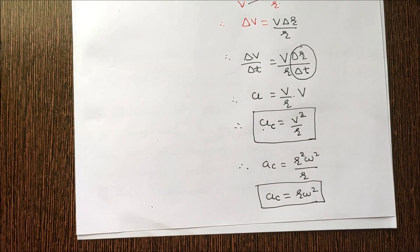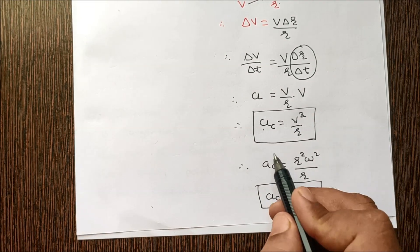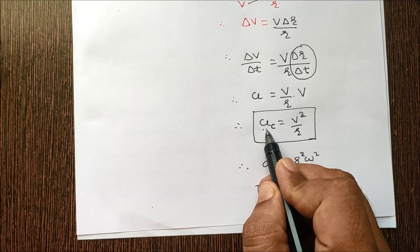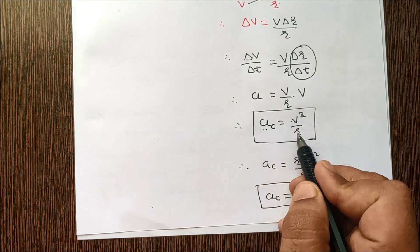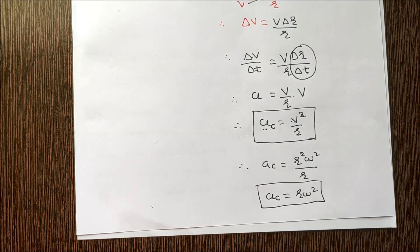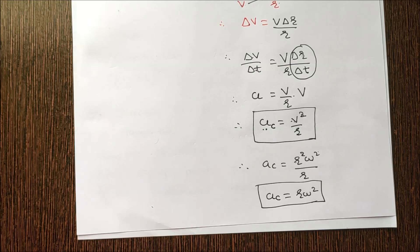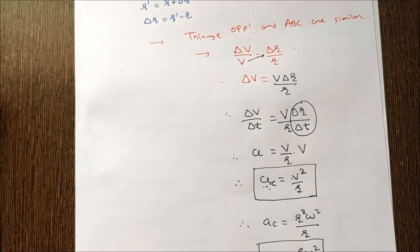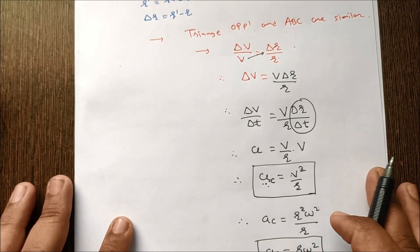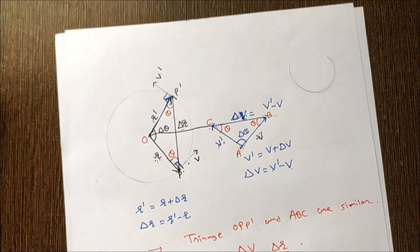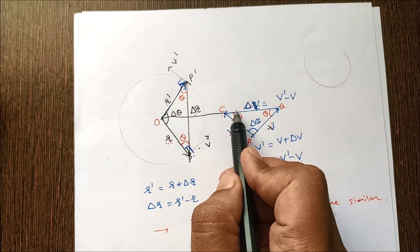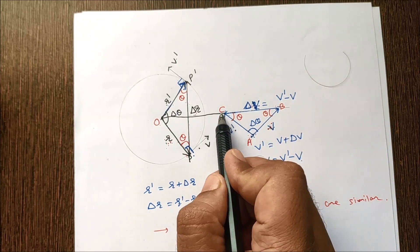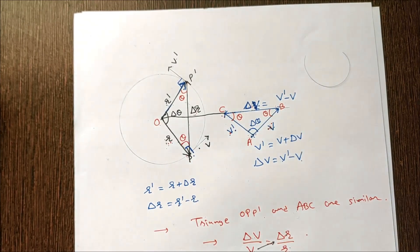The magnitude of centripetal acceleration is constant since V and R are constant, but its direction keeps changing at every point, so it is not a constant vector. The direction of centripetal acceleration is always towards the center of the circle.